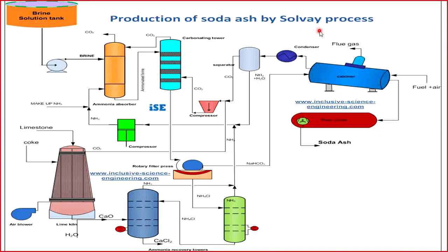In the Solvay process, we basically need carbon dioxide, ammonia, and brine (sodium chloride). We make these three agents react, and as a result we get sodium bicarbonate. We then calcine sodium bicarbonate, and as a result we get sodium carbonate, which is the desired product.